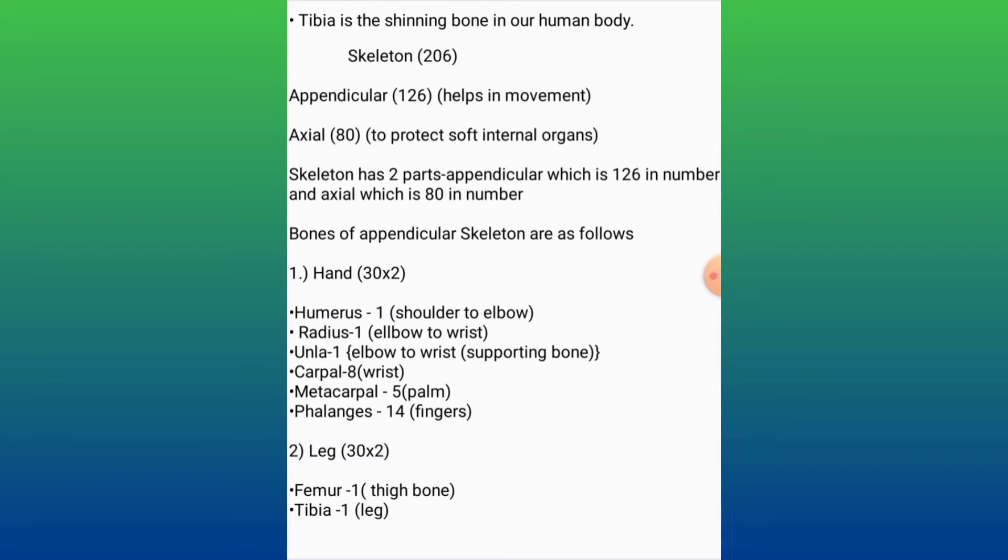We have two hands. The sum of the bones in one hand is 30. We multiply by 2: 30 into 2 is equal to 60 bones for both hands.